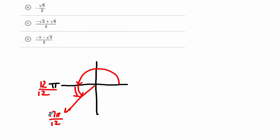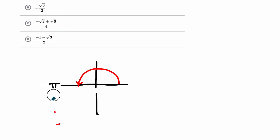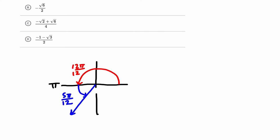So what I'm saying is this total angle is comprised of 12π over 12 and an additional 5π over 12. And all together, if we add these up, that is the 17/12ths.